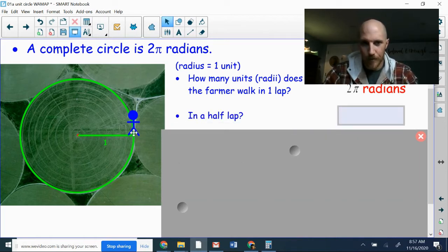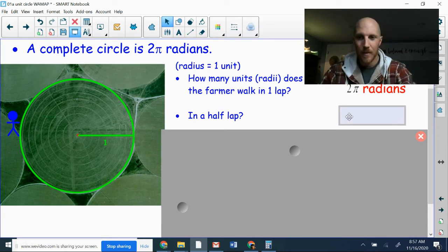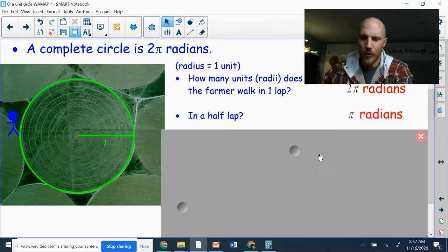What if we only go half of a lap? If you start here and you end right there, that's half of the circumference. If the whole circumference is 2π, then half of that would be 1π, or just π.